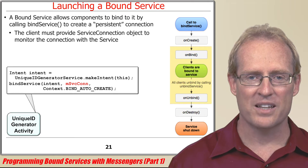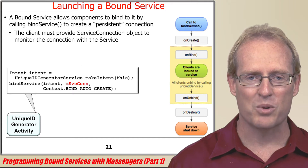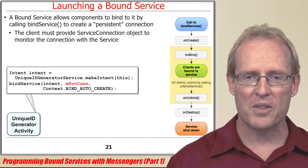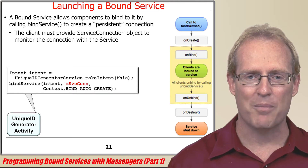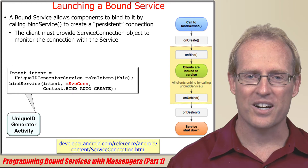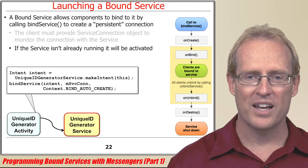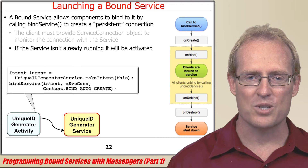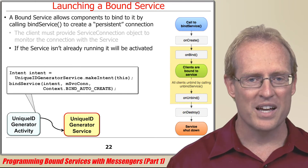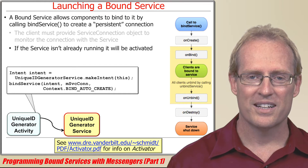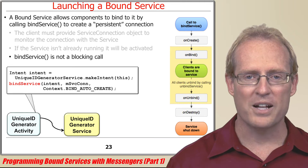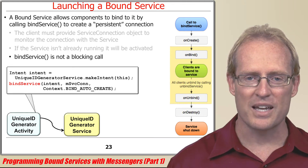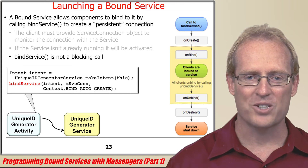In addition to passing the intent to bind service, the client must also provide a service connection object used to monitor the connection with the service. Hook methods defined in the service connection object are automatically called back by Android's service framework when connections are established and lost. In response to the bind service call, Android's activity manager service launches the service, if it's not already running, using the activator pattern. The activity manager service starts the service asynchronously, so the bind service method does not block the client synchronously while the unique ID generator service is being launched and run.